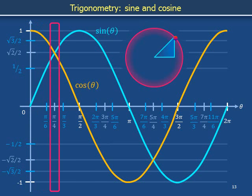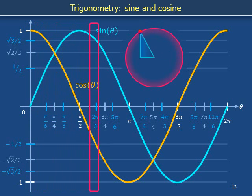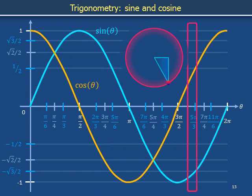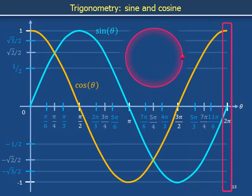Sine increases as the marker rises, decreases as the marker sets in the west, and passes through a nadir as the marker passes through the bottom of the circle. When the animation repeats quietly, talk through the shape of the cosine curve as we have just done for sine.